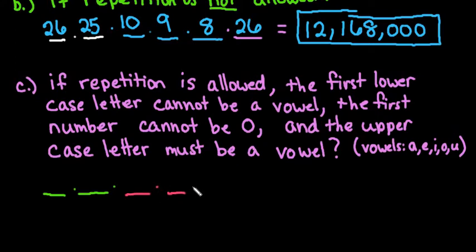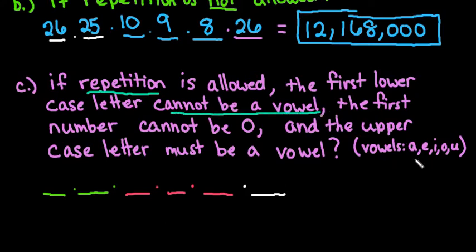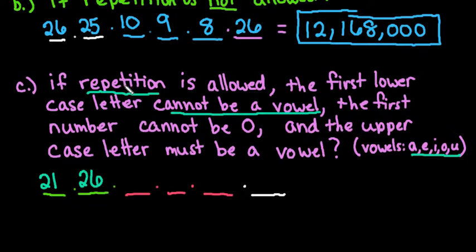This time repetition is allowed, so if I've used a letter or number I can use it again. However, the first lowercase letter cannot be a vowel. Vowels are A, E, I, O, and U, so there are only 21 choices for the first position. The second letter has no stipulation, so there are 26 total choices for it. If repetition were not allowed, that would change this number.